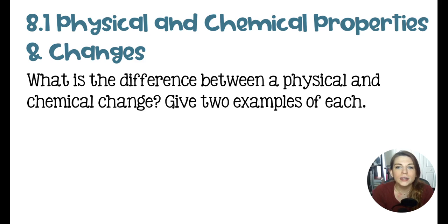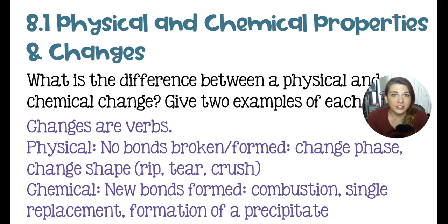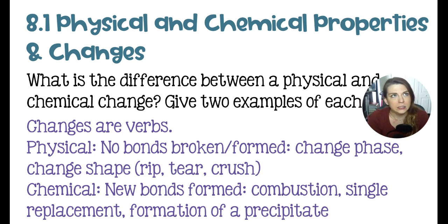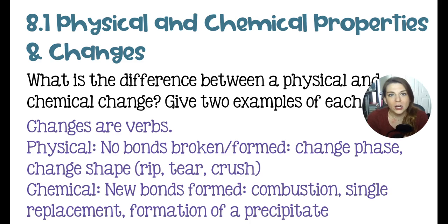The next question: what is the difference between a physical and chemical change? I like to describe changes as verbs. In a physical change, no bonds are broken and no bonds are formed — all you have is a change in appearance. All phase changes are physical changes: melting, freezing, boiling, condensing, subliming, and depositing. Changing the shape also counts — grinding salt with a mortar and pestle, crushing it, or tearing a piece of paper are all just physical changes.